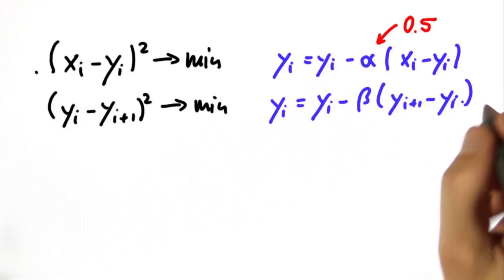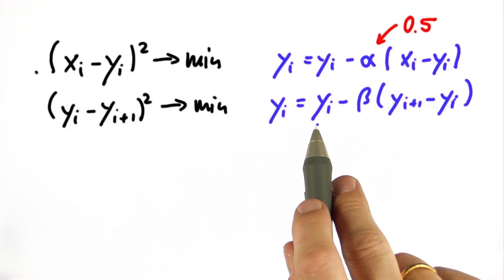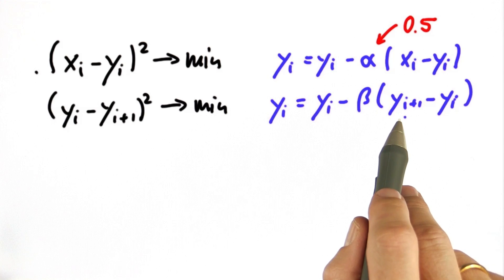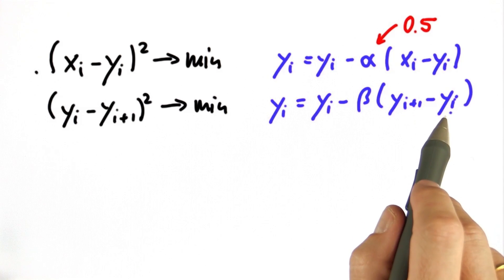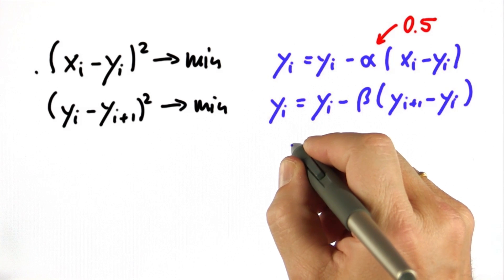For the second term, we could implement this as follows, where we retain the old y variable, but we move a little bit into the direction of yi plus 1, of yi plus 1 and away from yi, but an even better implementation looks as follows.